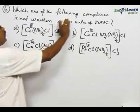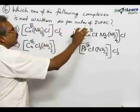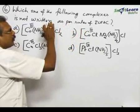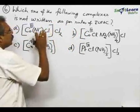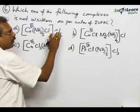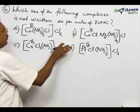Number 6, which one of the following complexes is not written as per rules of IUPAC, written in the sense of the formula. There are some rules and regulations for how to write the formula of a compound. If any complex violates that rule, we have to identify it.